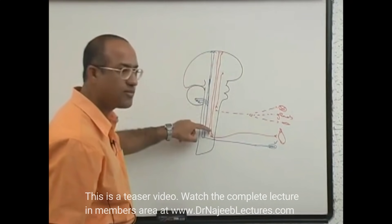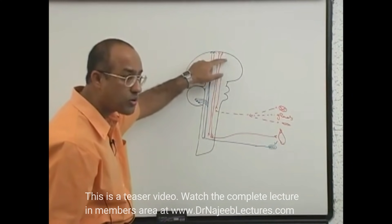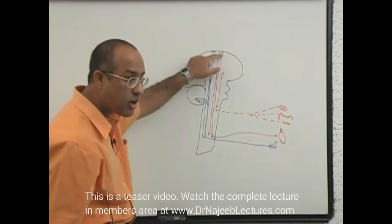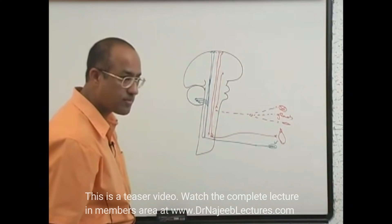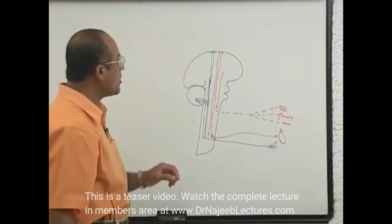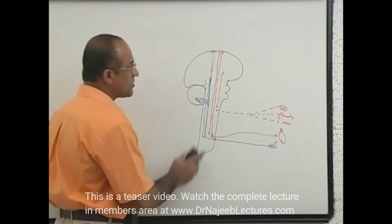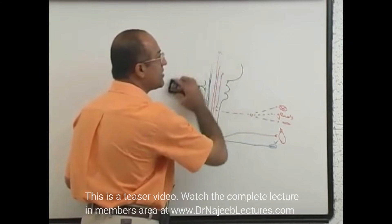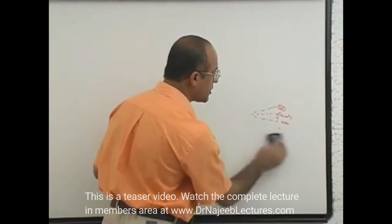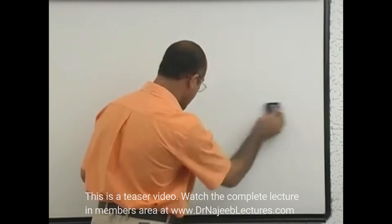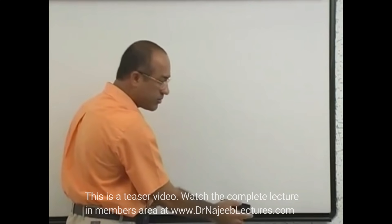Now we are going to talk about motor responses — which higher centers are involved and how they send information down to the lower level of the central nervous system. First, I will discuss the motor cortex, because the motor cortex is the highest center concerned with the generation of voluntary motor activity.